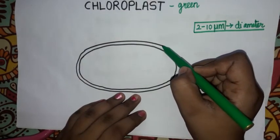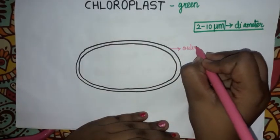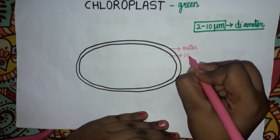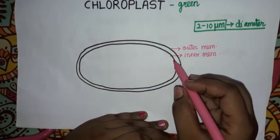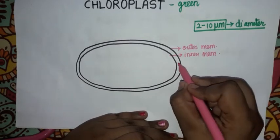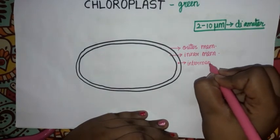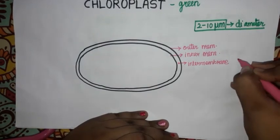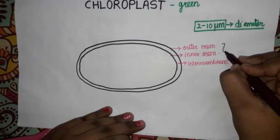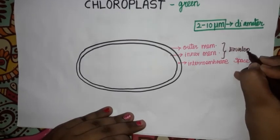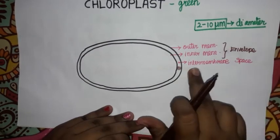Let's look at the envelope. This is the outer membrane and this is the inner membrane. Between the outer membrane and inner membrane there is a space — that is called the inter-membrane space.